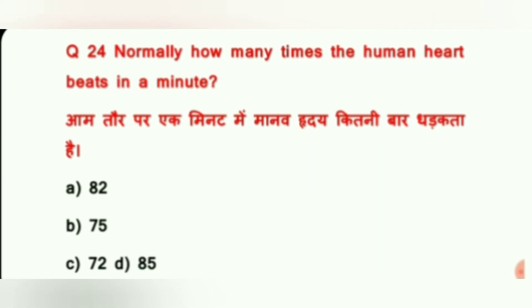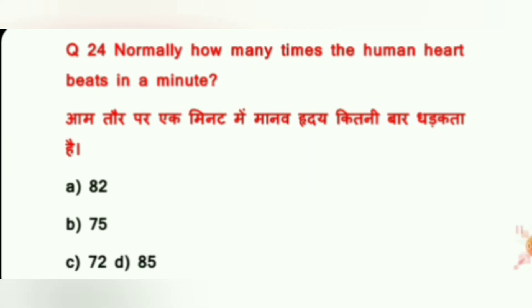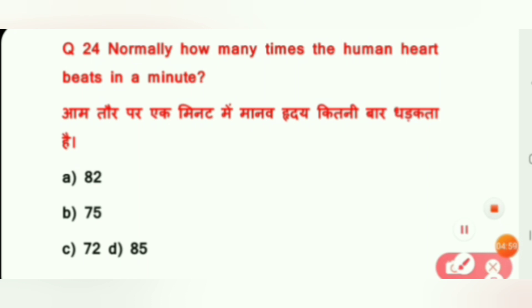Last question: Normally, how many times does the human heart beat in a minute? Options are: 82, 75, 72, and 85. The correct answer is 72.